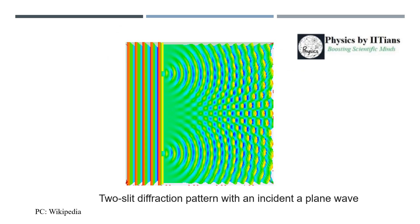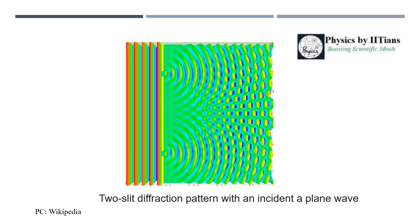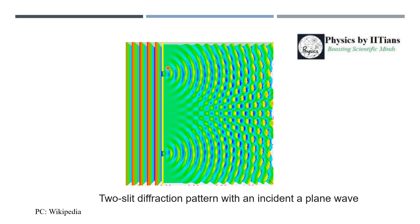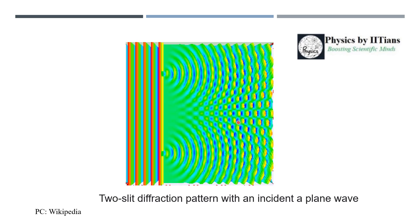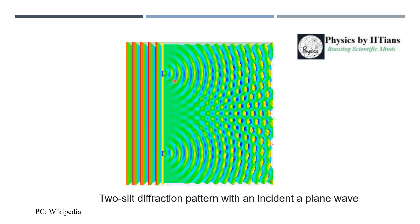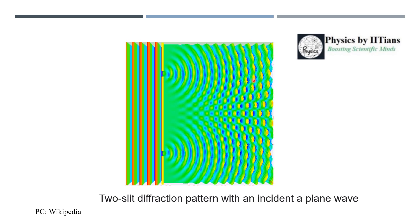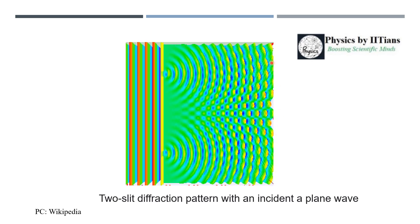As we know about the double slit experiment from Young's double slit experiment, if we pass light through two slits S1 and S2, we observe a diffraction pattern on the screen. A plane wave passes through the two slits, the waves interfere with each other, and constructive and destructive interference leads to the formation of interference fringes — a diffraction pattern on the screen.